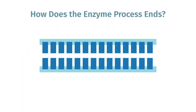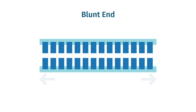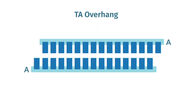A final feature to keep in mind is how a particular enzyme processes the ends of the amplified DNA. Some enzymes stop immediately, creating a blunt end. Other enzymes add an extra base, usually an A, creating a very short overhang. The importance of this overhang depends on how you plan to capture your PCR product.